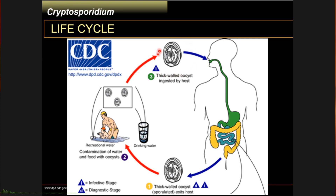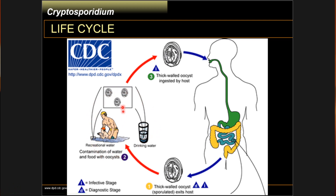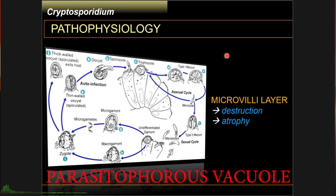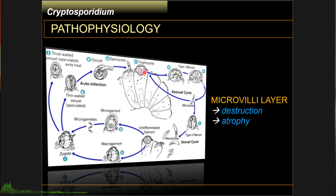You ingest the infective stage, which is the thick-walled oocyst. It goes down to your gut where it multiplies in your small intestines, and you excrete thick-walled oocysts. You then get exposed to the infective stage again when exposed to contaminated surroundings, which completes the life cycle. Now let's zoom in to what happens inside your intestines.